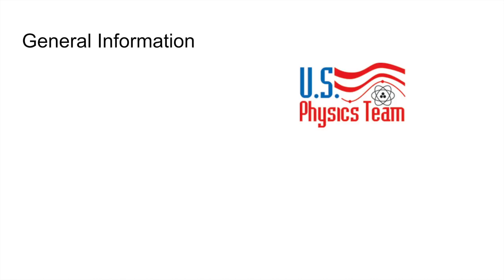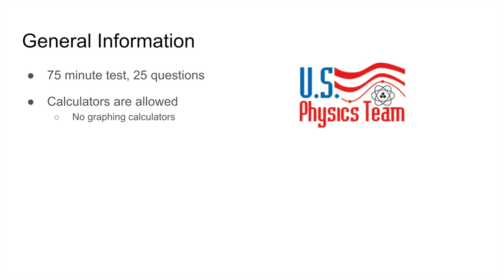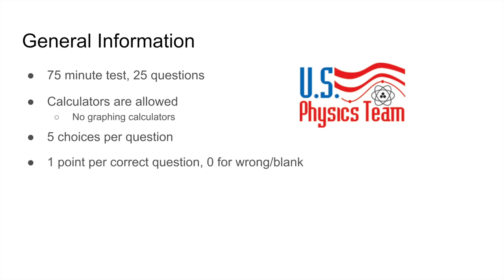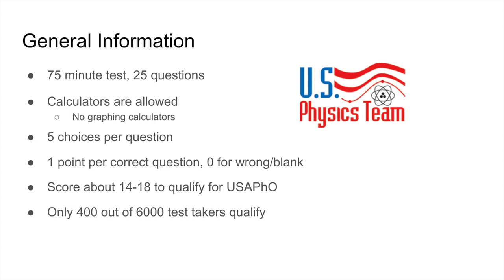First, some information about the test: this is a 75-minute test with 25 multiple choice questions. Calculators are allowed but you may not use your own graphing calculators. There are five answer choices per question and you get one point per correct answer and zero for leaving the question blank or getting the answer wrong, so you should always put an answer choice for each question. The cutoff for qualifying to the next level is around 14 through 18 problems, and only about 400 people out of the 6,000 test takers last year qualified. The average score is 8 out of 25, so don't feel that bad if you don't do as well as expected.